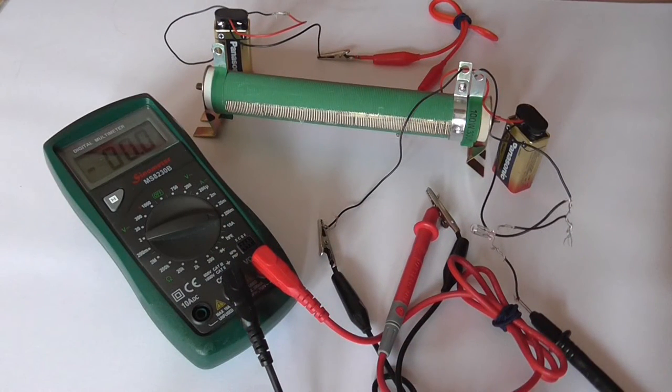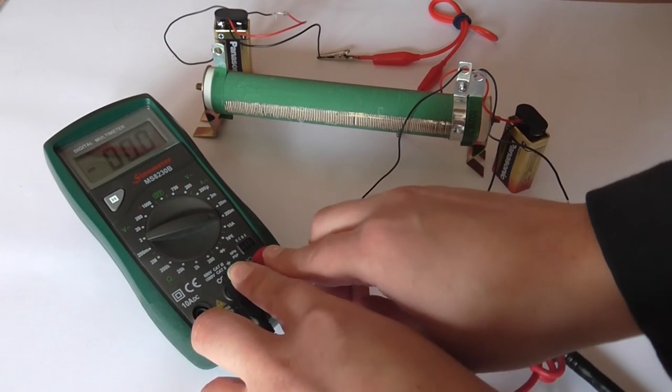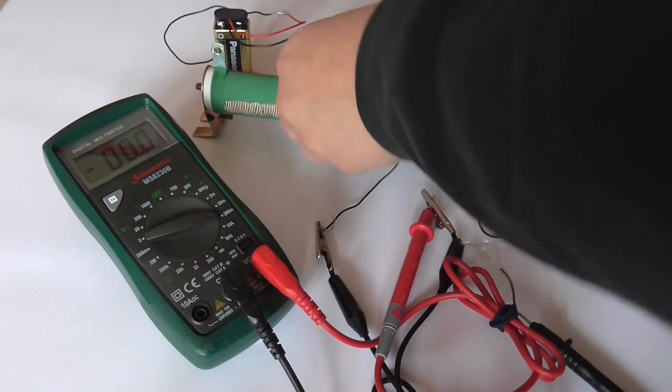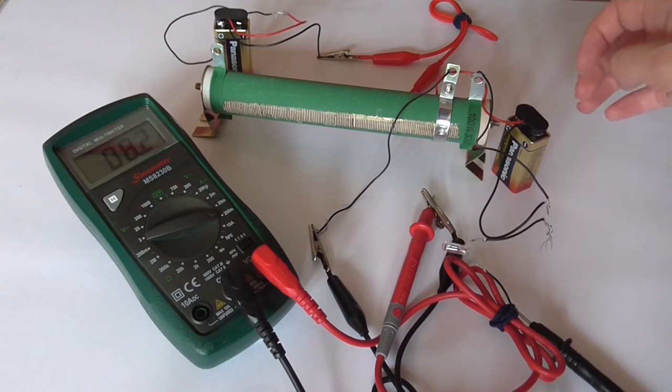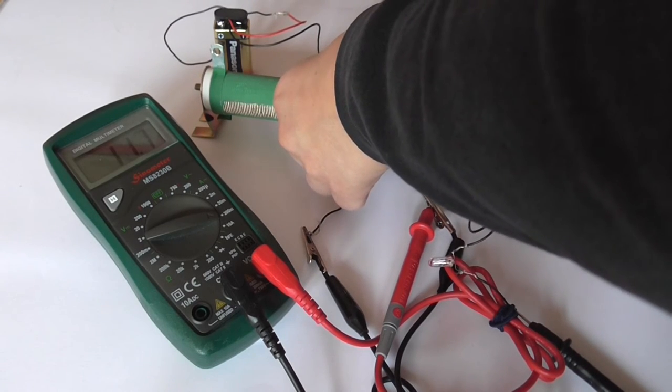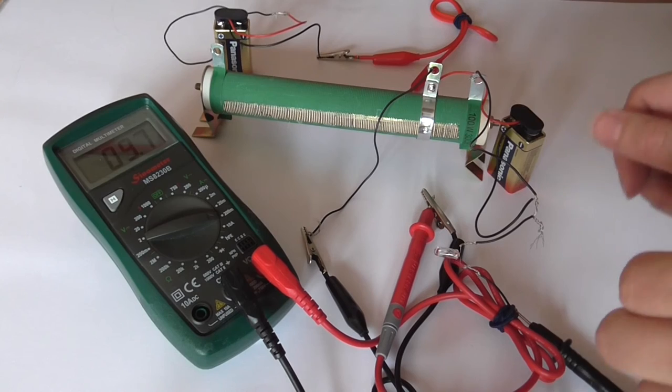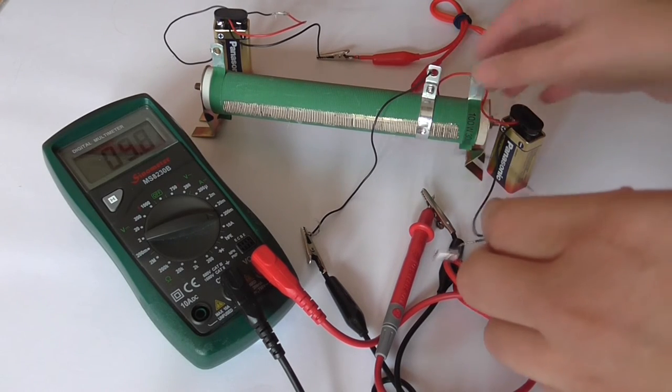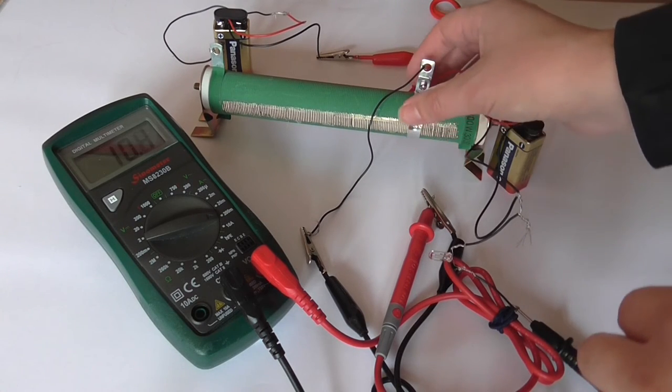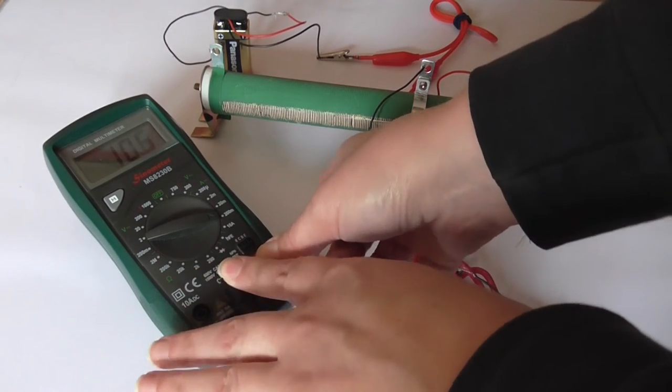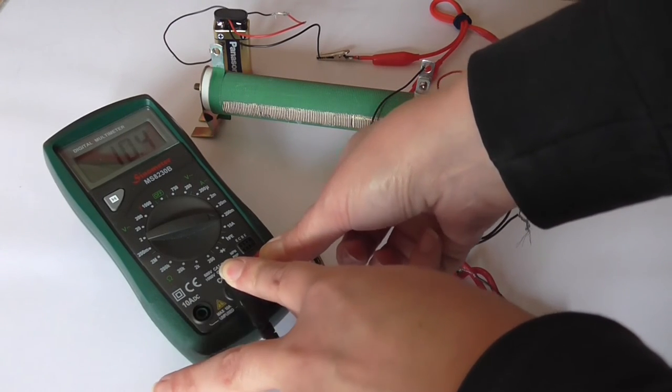We start off with 0 volts, which gives a reading of 0 milliamps. Notice it is currently in the milliamp range. Now let's move it up a little bit. So that's about 10 milliamps, 10.4 milliamps.